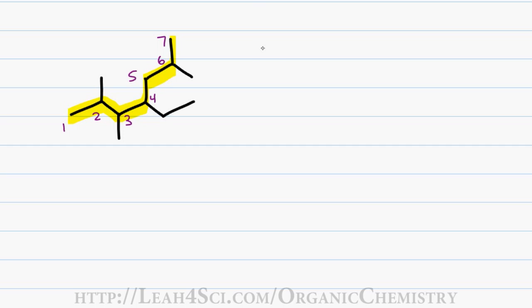I have 7 carbons giving me a first name of hept. I have only single bonds giving me ane. And now let's look at substituents. I have a methyl group on carbon 2, 3 and 6 and so I name this 2, 3, 6 trimethyl.